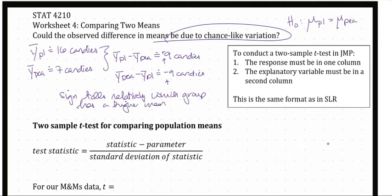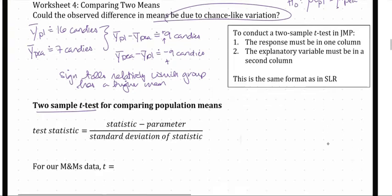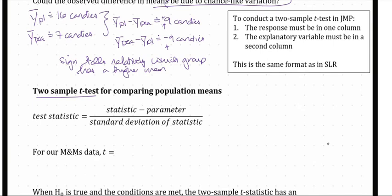The direction of the subtraction is important, as well as the sign of the difference. In order to test whether the observed difference could be due to just chance-like variation or not, we are going to do a two-sample t-test for comparing population means. Any t-observed test statistic is a difference between what we observed — our sample statistic — minus the hypothesized parameter, divided by the standard deviation of the statistic.